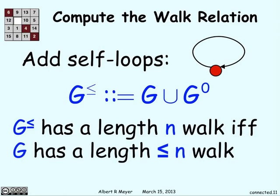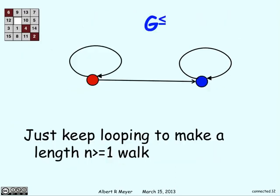G≤ has a length n walk if G has a less than or equal to n walk. Think about that. If I can get from vertex x to vertex y in n minus some amount of steps in G, then I can get there in n steps in G≤ because I can just loop around. If I want to get here from red to blue, I can get there in one step without those self-loops. But with the self-loops, I can just keep starting from red, go around to red as many times as I want, n minus 1 times, and then do this final step. So I can make a length n walk for any value of n greater than 1.